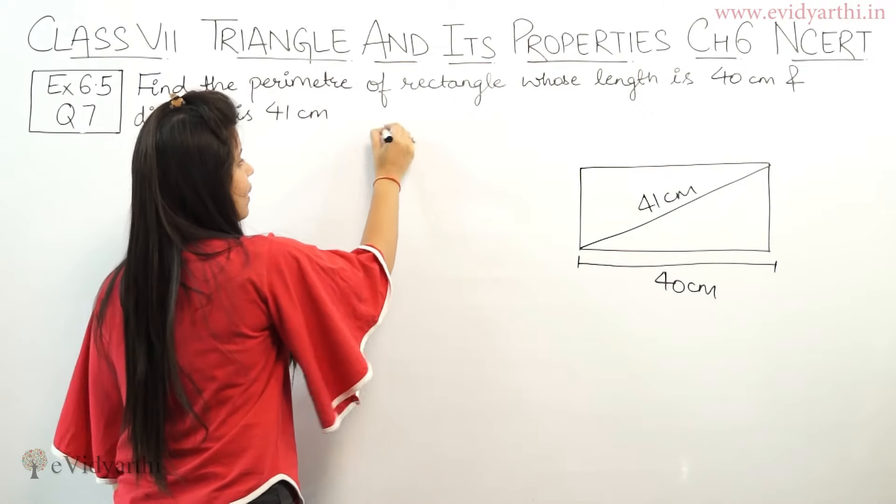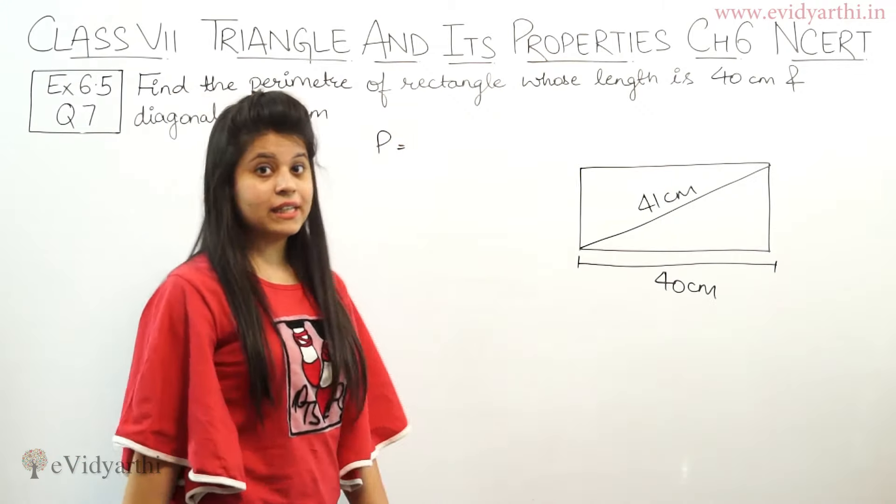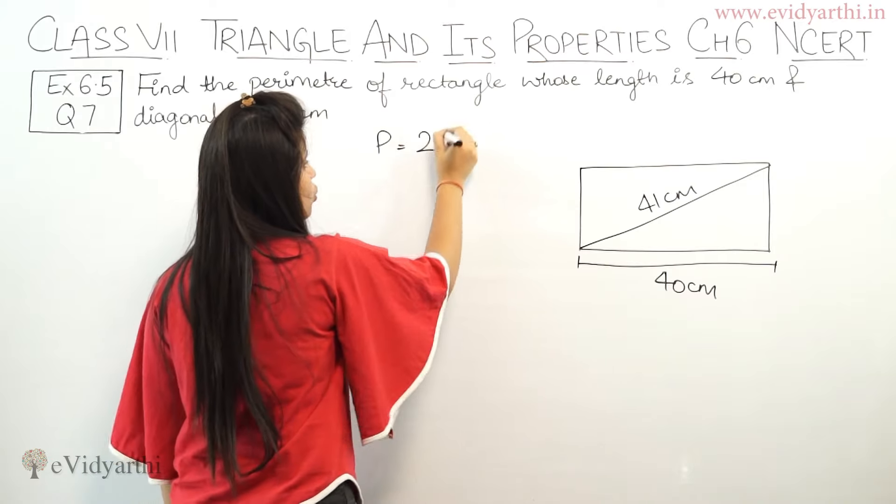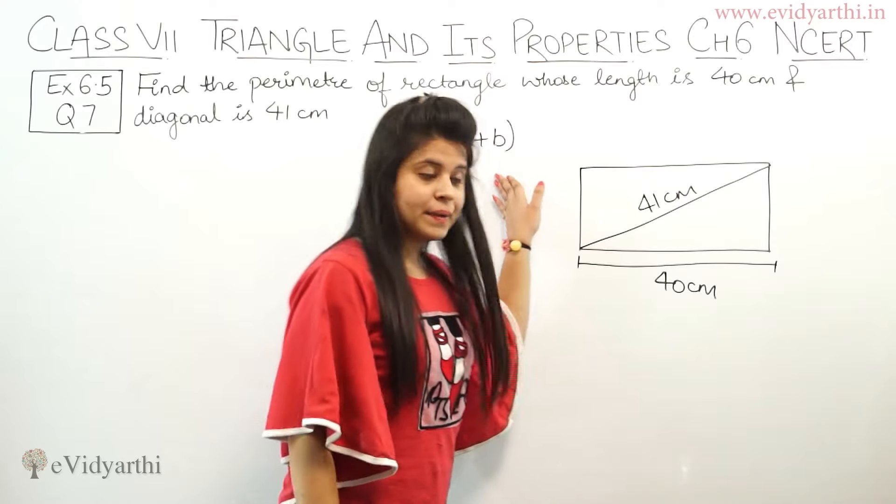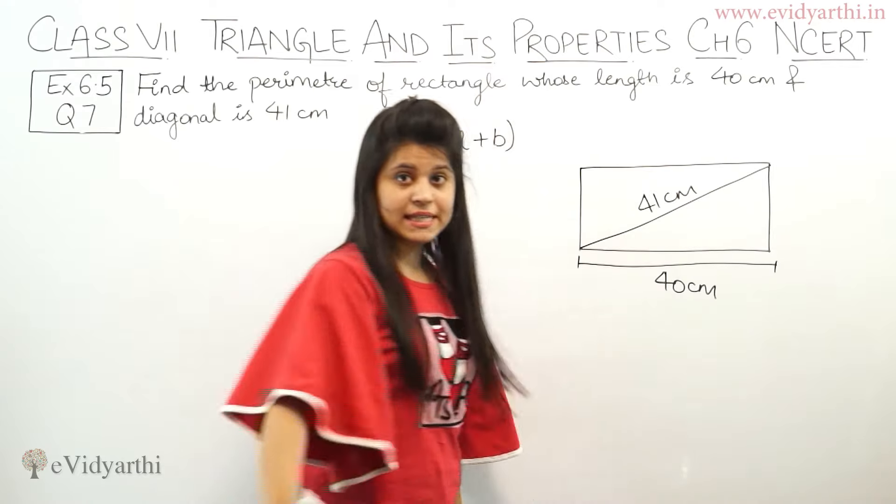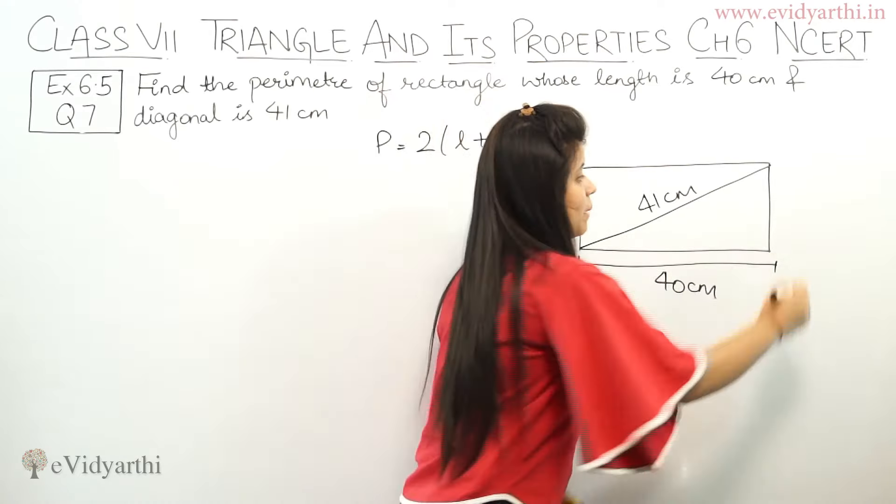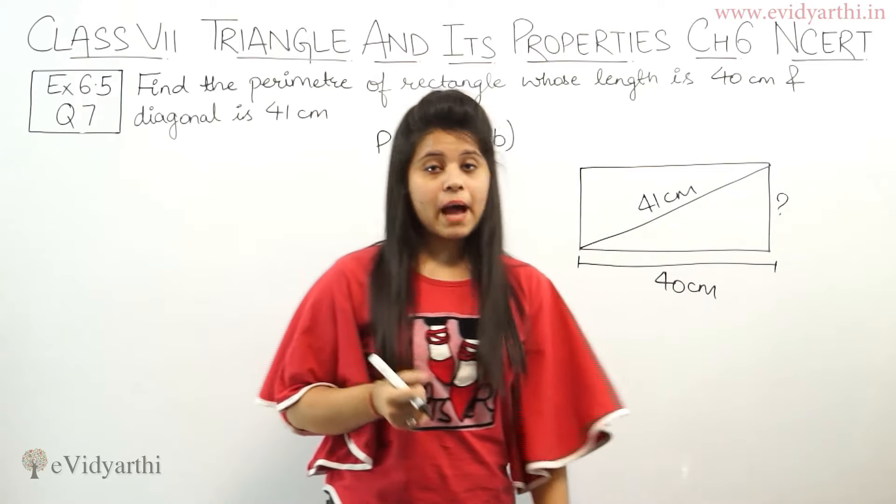To find the perimeter of a rectangle, what is the perimeter of a rectangle? 2(L + B). This means 2 times length plus breadth. Now length is 40 cm, but breadth is not given. You need breadth.